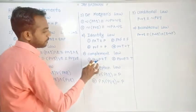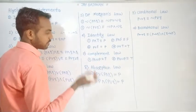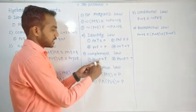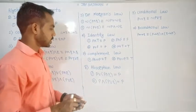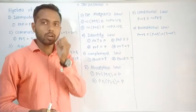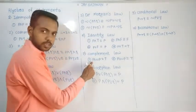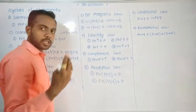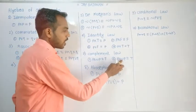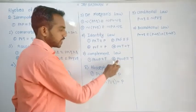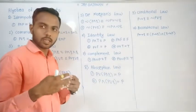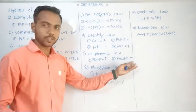Complement law: P and negation P equals F. Just imagine — a statement and its negation is always false. For example, '3 is an odd number AND 3 is not an odd number' is obviously false. P or negation P equals T. For example, '3 is an odd number OR 3 is not an odd number' is obviously true.